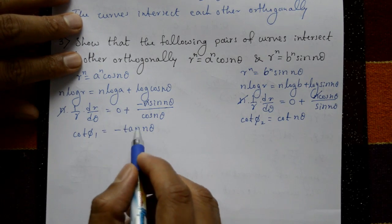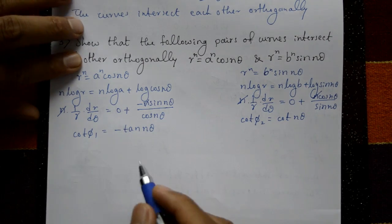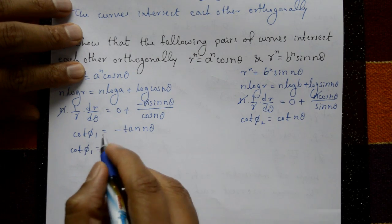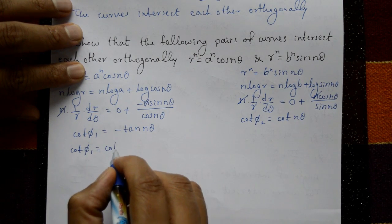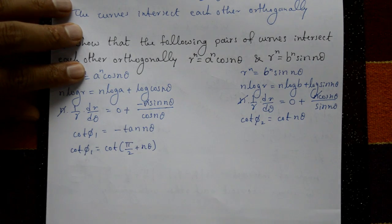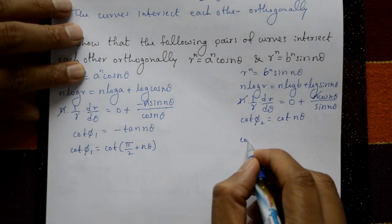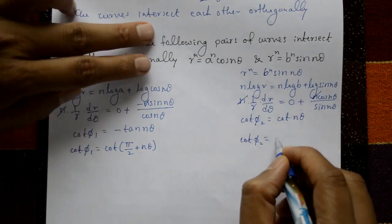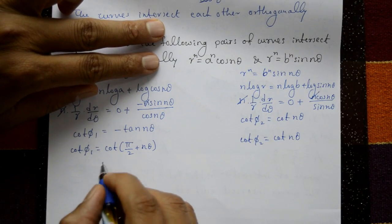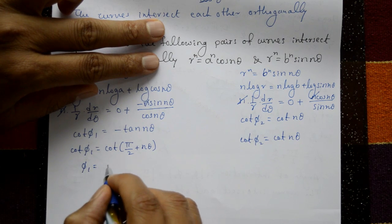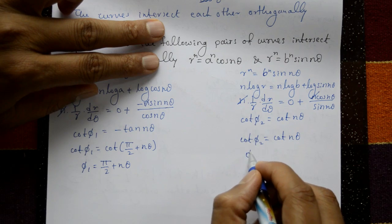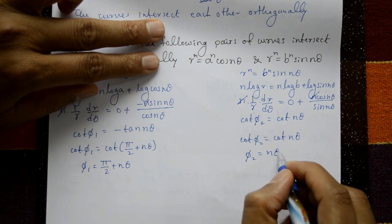Now, cot(φ₁) = −tan(nθ) = cot(π/2 + nθ), so φ₁ = π/2 + nθ. And cot(φ₂) = cot(nθ), so φ₂ = nθ.